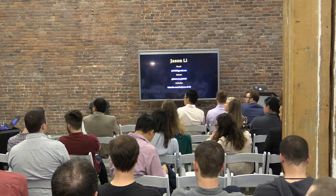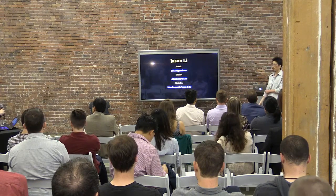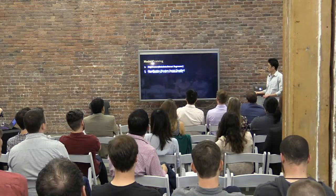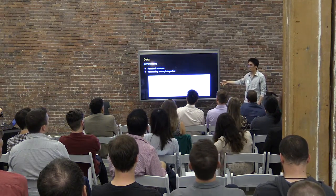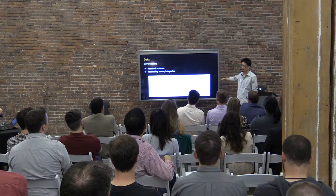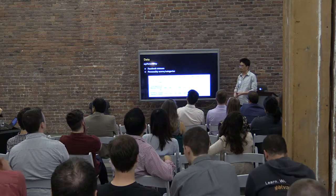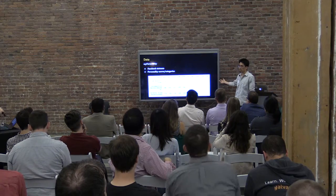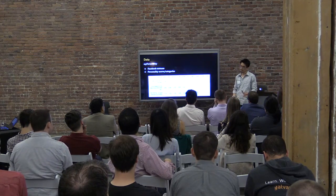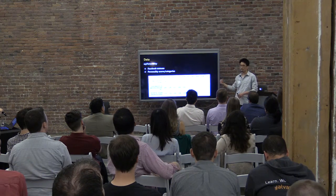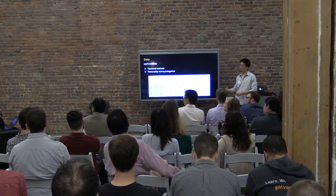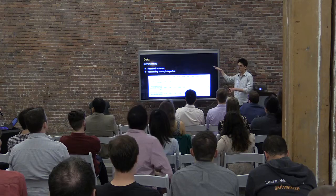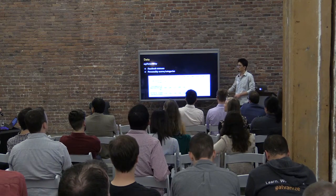What was your training dataset? The training dataset is the My Personality dataset. It's similar to what was shown, except there are a few other features like network centrality, density, and betweenness, and other Facebook features. Unfortunately, I wasn't able to use those features in the model yet. All the statuses have an associated personality score and a categorical score.